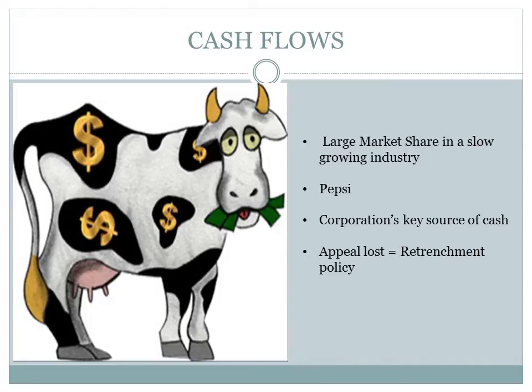Cash Cows represent business units having a large market share in a mature, slow-growing industry. For instance, Pepsi — a business that is not growing but makes lots of profit in the meantime. Cash cows require little investment and generate cash that can be utilized for investments in other business units. These strategic business units are the corporation's key source of cash and specifically the core business — they are the base of an organization. These businesses usually follow stability strategies. If cash cows lose their appeal and move towards deterioration, then a retrenchment policy may be pursued.